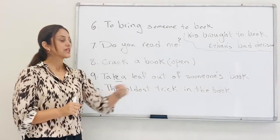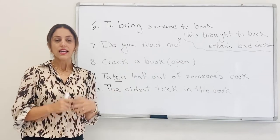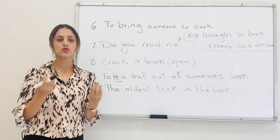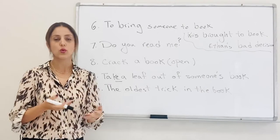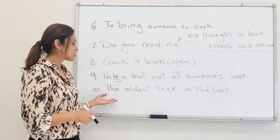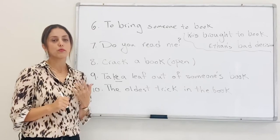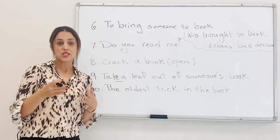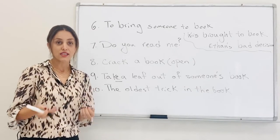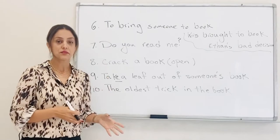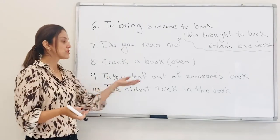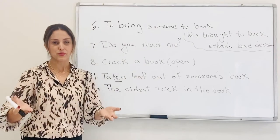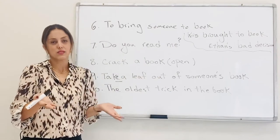The oldest trick in the book, it means a trick is so predictable that you know what's going on. So you say, this is the oldest trick in the book. Does he really think that I believe that he can lift that heavy thing? So I don't believe him. That's the oldest trick in the book. It means so predictable. I know that that's not true.